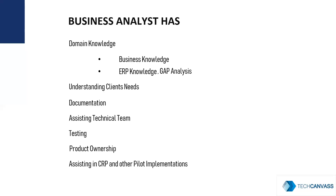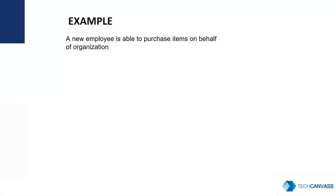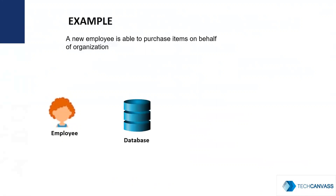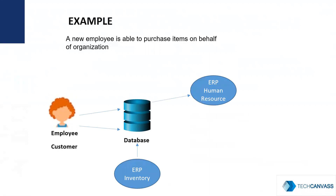Now let us understand the business analyst's role with the help of a few examples. A new employee is able to purchase items on behalf of the organization. An employee is hired and his record gets created in the ERP system, stored in the database, and reflected in the Human Resource module. This employee can then be converted into a potential customer to use the Account Receivables module, where the item gets stored and the customer uses that module. This shows how data interacts between different modules.